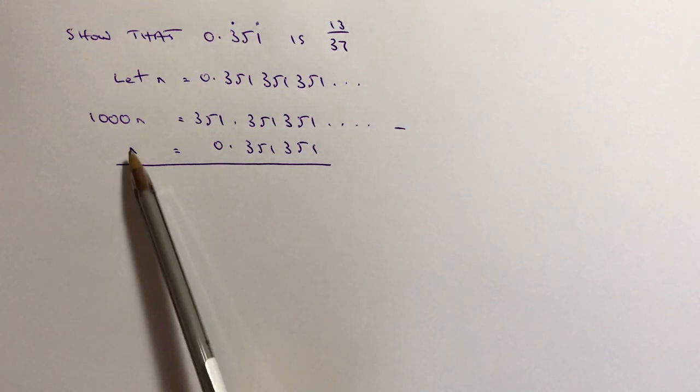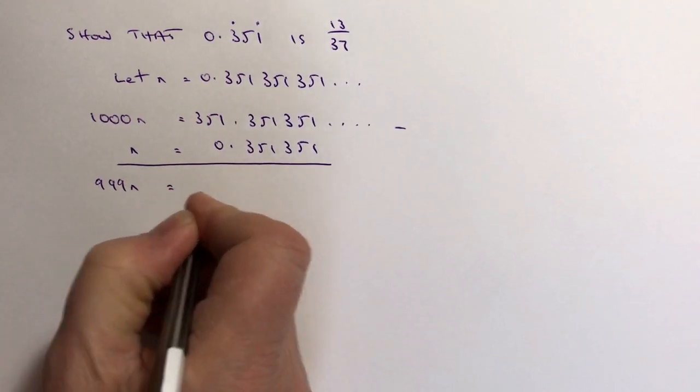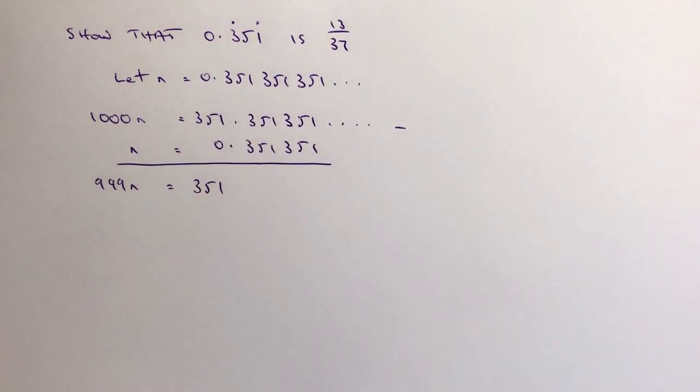If I take one away from the other, I get 1000 n take away n. Well, that's going to be 999 n and that's going to equal 351.